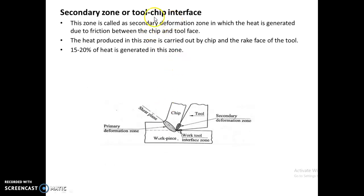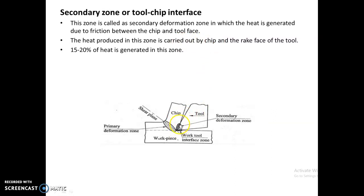The secondary zone, or tool-chip interface, is called the secondary deformation zone, in which heat is generated due to friction between the chip and the tool face. Wherever the chip is formed, it travels and slides over the rake face of the tool. Due to the interaction and friction between the chip and the rake face, a large amount of heat is generated. The heat produced in this zone is carried away by the chip and the rake face of the tool. Around 15 to 20 percent of heat is generated in this zone.